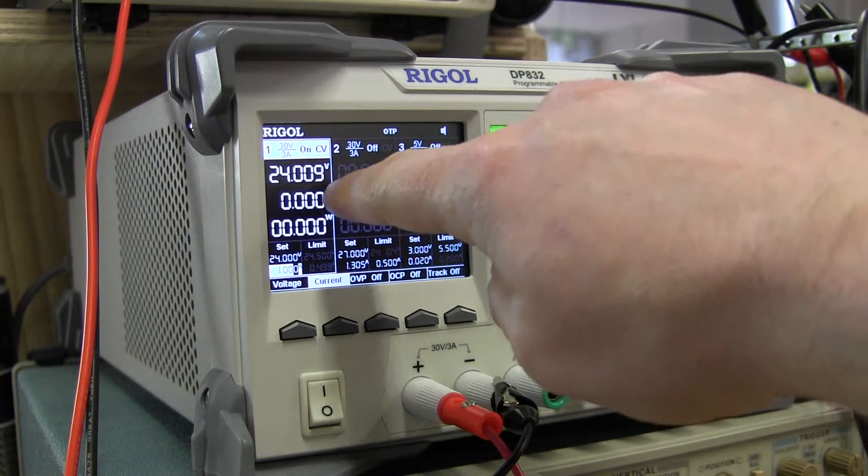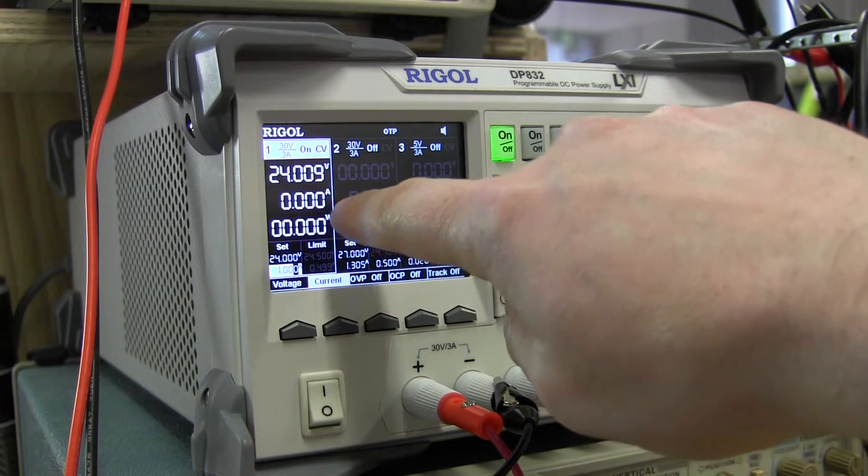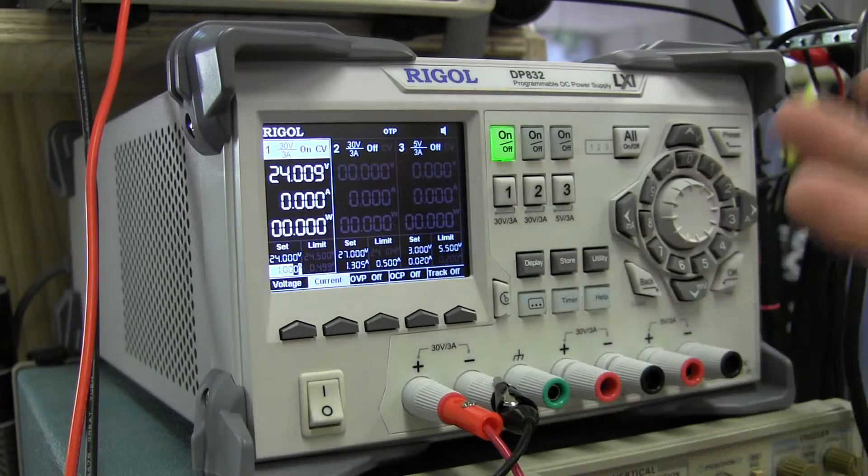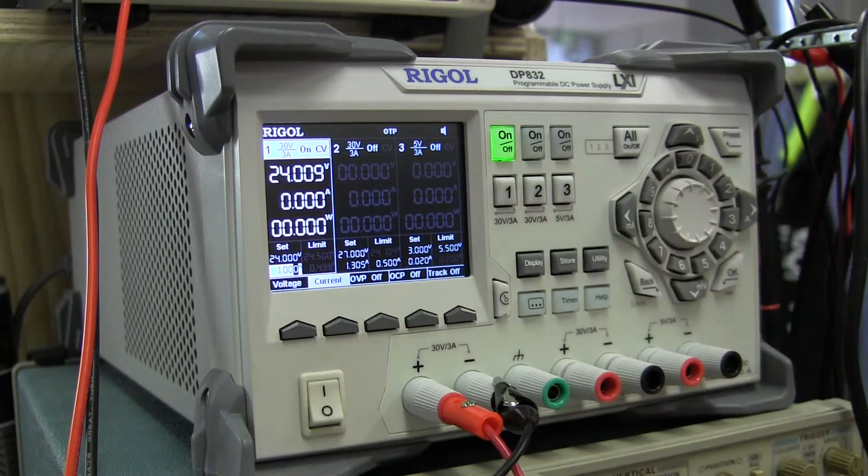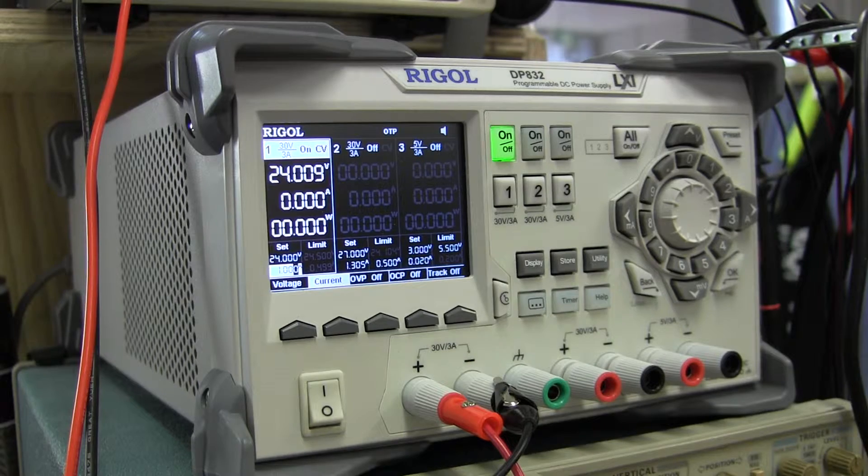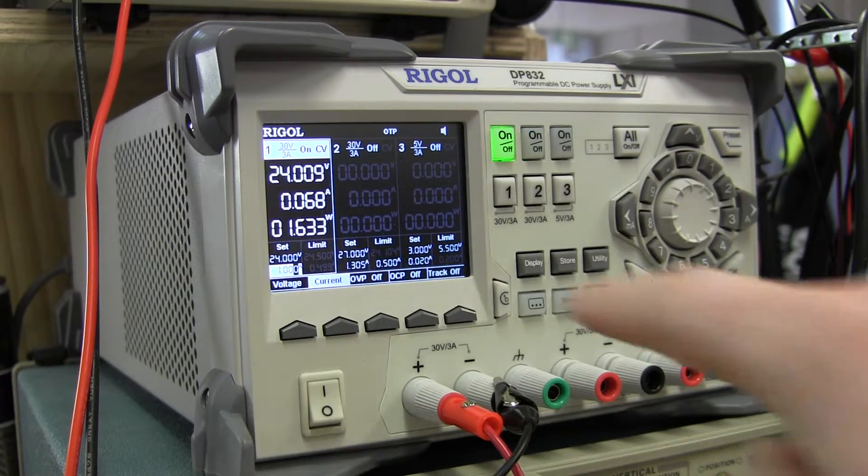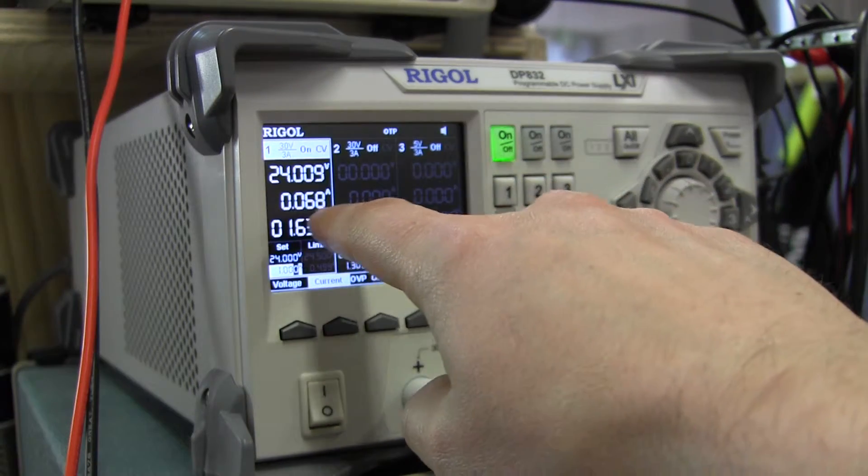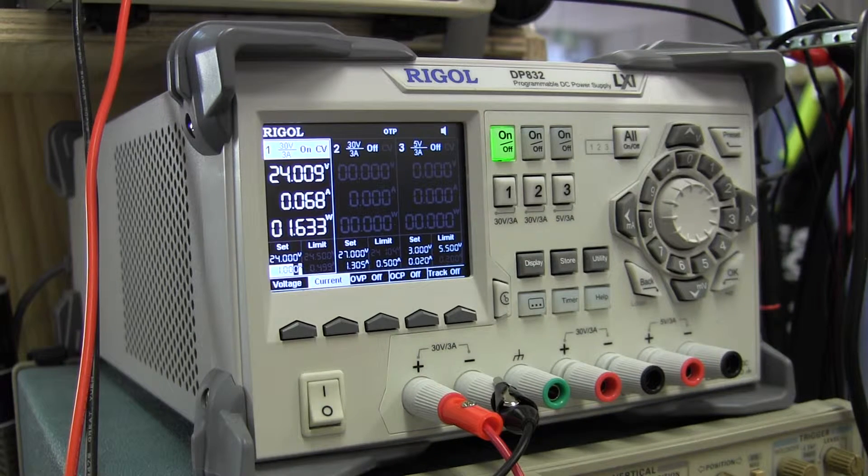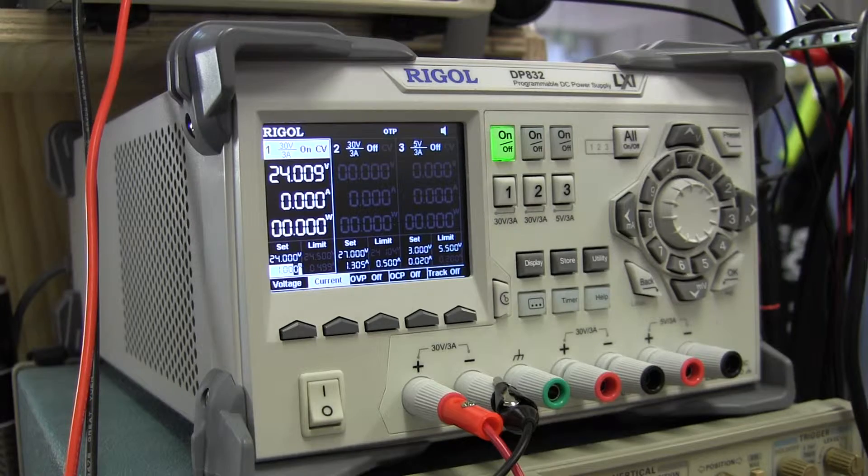What we've got here is a 24-volt power supply. It's capable of doing 1 amp, and I've limited it to 1 amp. When I turn this on, you can see 0.68 milliamps, which is what the specification sheet shows for current draw. I've turned that off now.